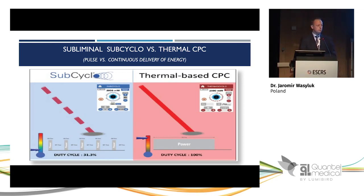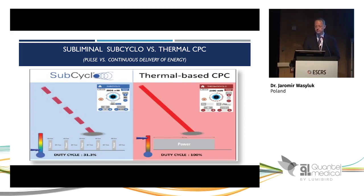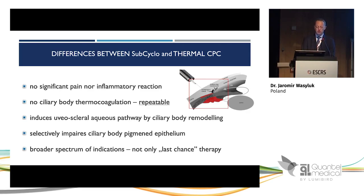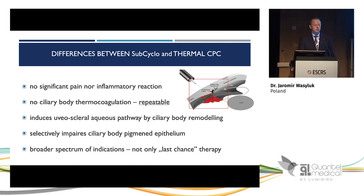This is a non-thermal, low-thermal procedure, relying on tissue thermal relaxation time — so the tissue is not thermally destroyed. In traditional TCPC, the duty cycle is 100%, meaning power is delivered to the tissue continuously, causing necrosis. In SubCycle, there is no significant pain or inflammatory reaction after the session, no ciliary body thermal photocoagulation, so the method can be repeated. It induces the uveoscleral outflow pathway by remodeling the ciliary body and selectively impairs ciliary body pigment epithelium, giving it a broader spectrum of indications than traditional TCPC.